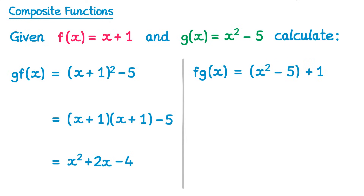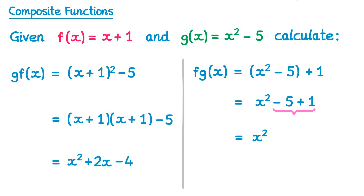Now we can simplify this one as well. So we have x squared minus 5, and we don't actually need the brackets here, and then plus 1. The negative 5 plus 1 would simplify, so we end up with x squared take away 4.